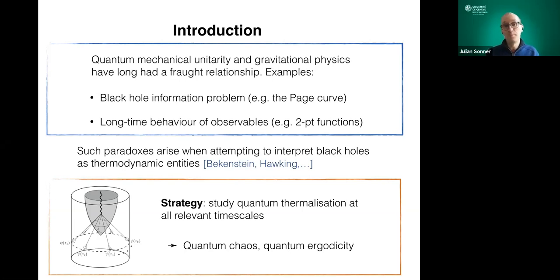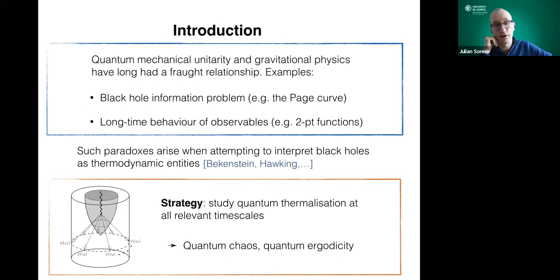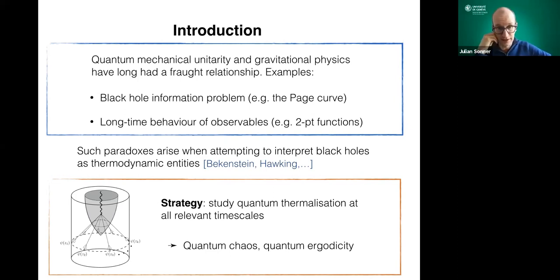Perhaps more down to earth, one can find signatures of tension between unitarity and semi-classical gravity in the long-time behavior of observables such as simple two-point functions. These kinds of paradoxes arise precisely when we take seriously the results of Bekenstein and Hawking — that black holes are thermodynamic entities — but with peculiar features they don't share with other thermodynamic entities. This is the battlefield between unitarity and semi-classical gravity.